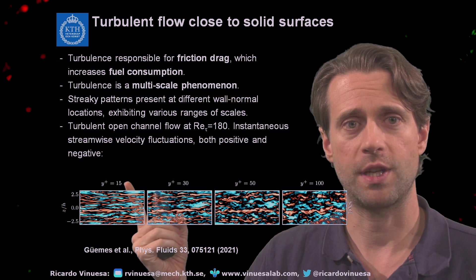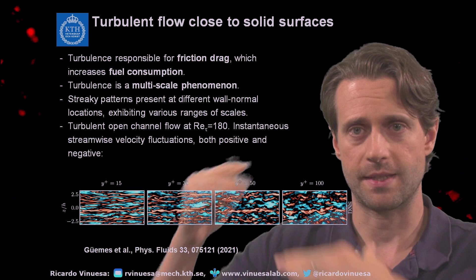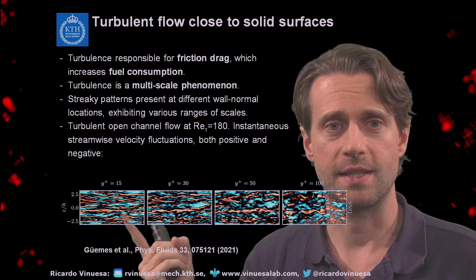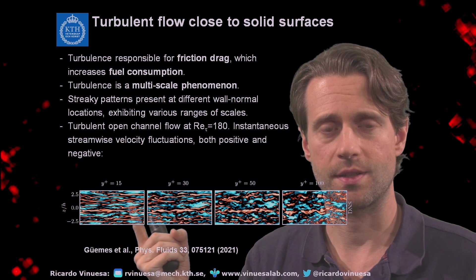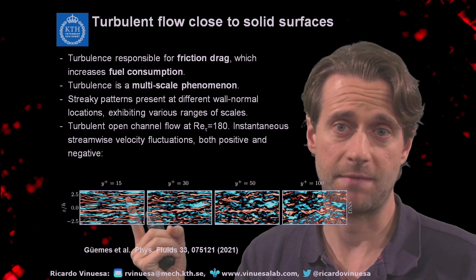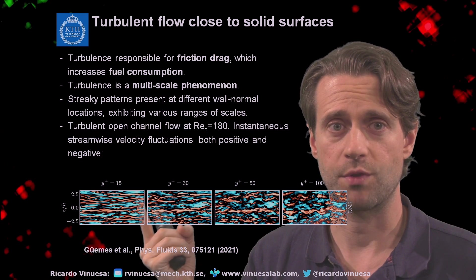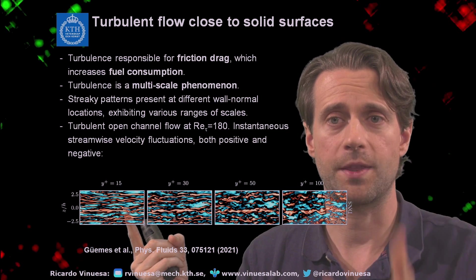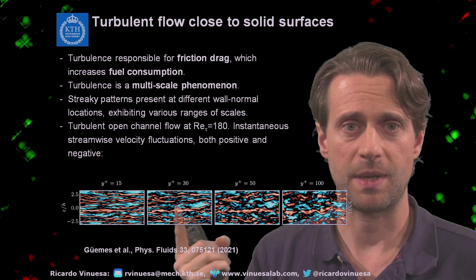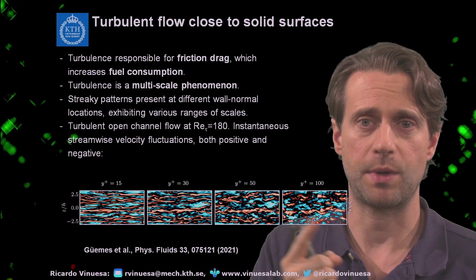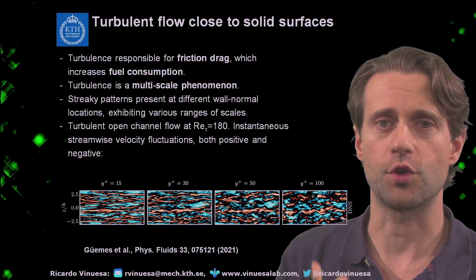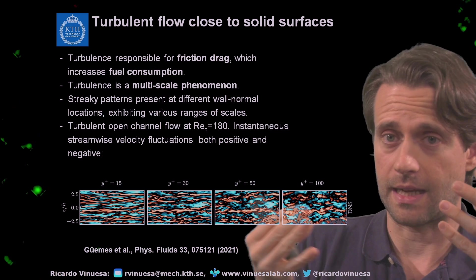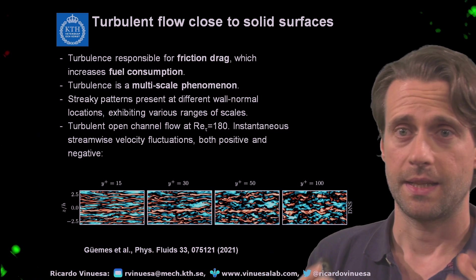Here you see the wall-normal locations — y⁺ = 15, that's in the near-wall region where the fluctuations are stronger. You can see the blue and red streaks — the high and low speed streaks with positive and negative fluctuations — which are present as I go farther away from the wall. If I go to y⁺ = 30, 50, and 100, you still see those streaky patterns that have a manifestation at the wall.